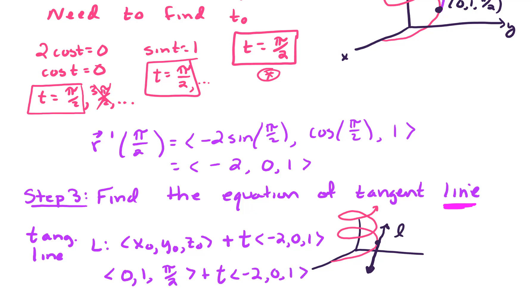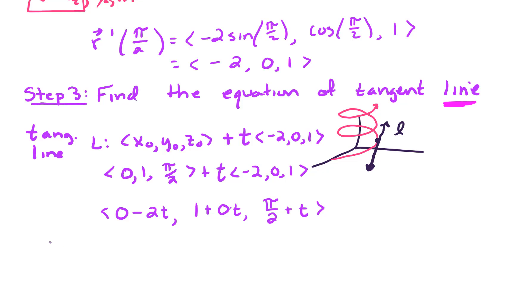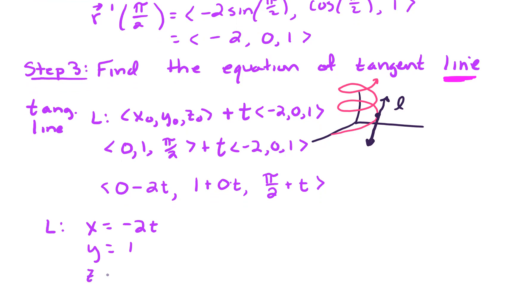So it looks like our tangent line is described by 0 minus 2t in the first component. Second component, 1 plus 0t. And third component, pi over 2 plus t. Now the directions said we really want the parametric equations. So line L looks like x is negative 2t. Y is given by 1, just 1 plus 0t. And then z looks like pi over 2 plus t.